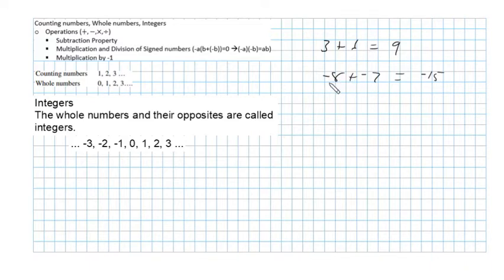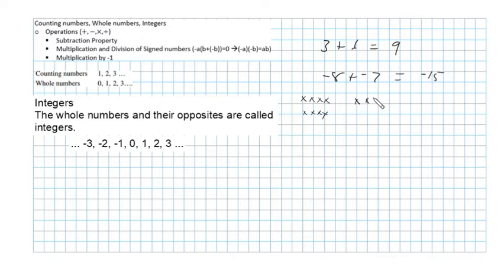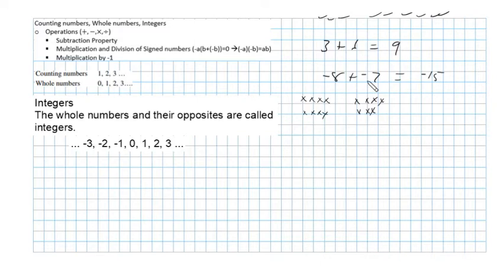One way to look at this is to imagine that negative numbers are x's and positive numbers are check marks. If I have 8 x's and then 7 more x's, I have 15 x's — that's minus 15. And if I have 3 check marks and 6 check marks, that gives me 9 check marks. In your textbook, they use red and blue circles to explain this, but it's easier to just use x's and check marks.